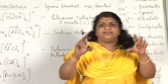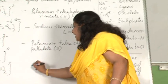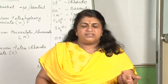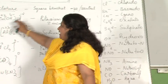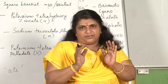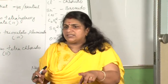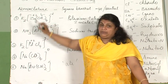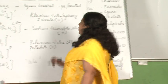If the coordination entity — that is, the square bracket — is negative, the metal name should end with '-ate': cobalt becomes cobaltate, iron becomes ferrate, gold becomes aurate, silver becomes argentate, nickel becomes nickelate, palladium becomes palladate. The name of the metal should end with '-ate'. If the square bracket is negative, you identify the ligands present and find the oxidation state of the central metal ion, then apply the '-ate' ending.